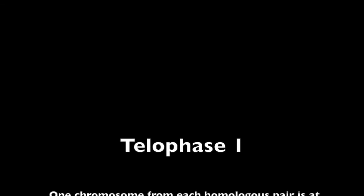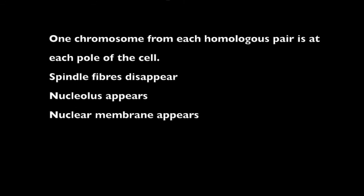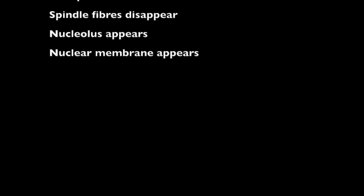In telophase, the fourth phase of meiosis, one chromosome from each homologous pair is at each pole of the cell. Spindle fibers disappear and the nucleolus appears and nuclear membrane appears in each cell.